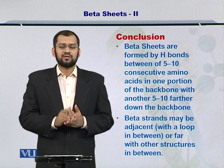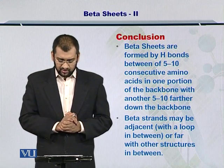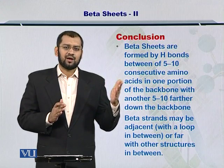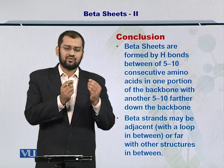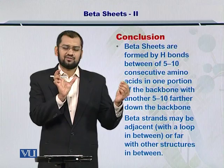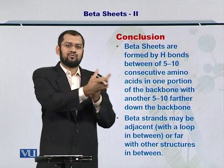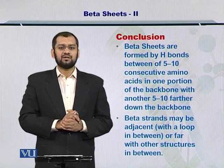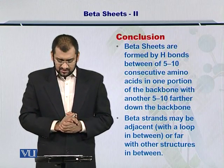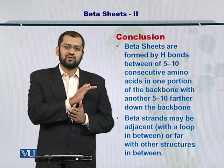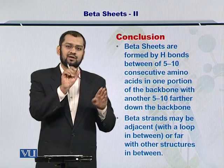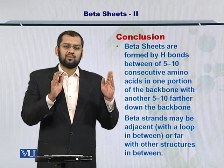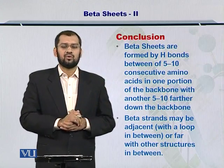In conclusion, the important take-home message is that beta sheets are formed by hydrogen bonding between 5 to 10 consecutive amino acids along with 5 to 10 amino acids down the amino acid sequence. If you have the entire peptide chain, then 5 to 10 amino acids from one portion make hydrogen bonds with 5 to 10 amino acids from another portion in the protein backbone. This leads to the formation of a beta sheet. The beta strands may be adjacent — with just two amino acids in between forming a beta turn — or there could be bigger portions between the two beta strands in the form of loops or even alpha helices.